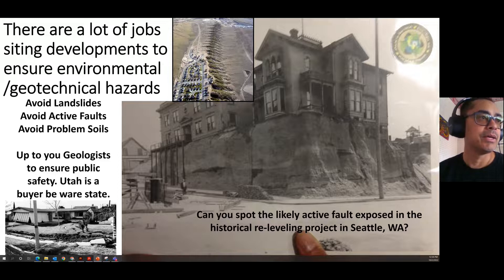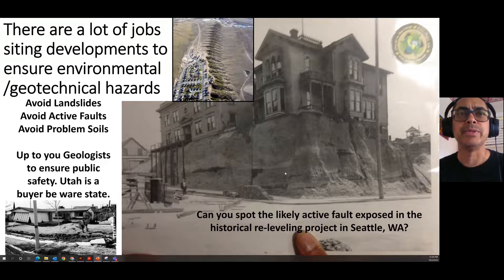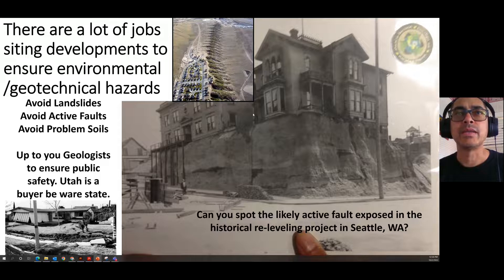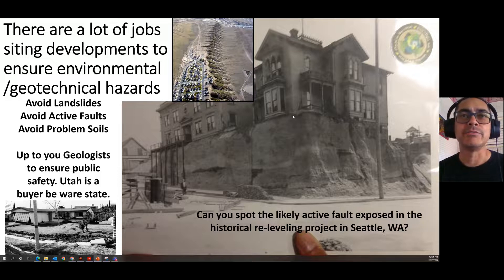There are many employment opportunities for geologists in citing developments to ensure avoidance of geotechnical hazards including landslides, faults, and problem soils. A 1971 California earthquake showed surface deformation running right through a house — there are now regulations in Utah and California to avoid this. We want to characterize zones we build on and not put houses right on faults. In Seattle, fault structures are visible in old underground areas of downtown, running through the city where we can't see them in today's landscape, but they are there and we want to avoid building on them.